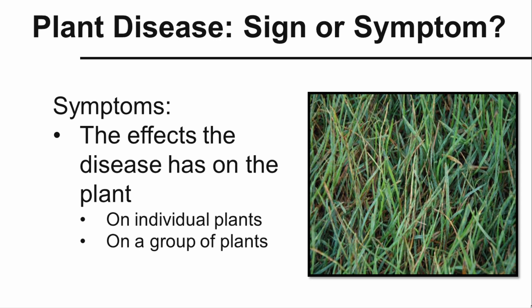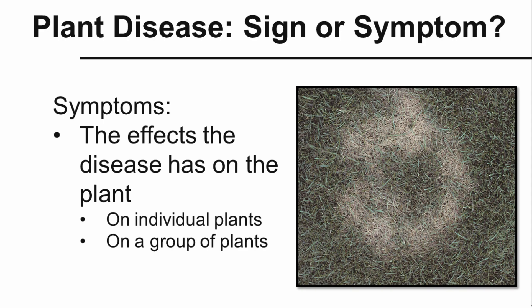Symptoms are the effects the disease has on the plant, but also on groups of plants. In this particular case, it's necrotic ring spot, and it produces this very distinct-looking frog eye appearance on this group of turf grass plants. So it's a symptom — it's the reaction that the plant has to that pathogen.